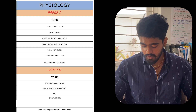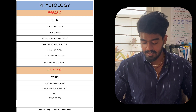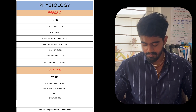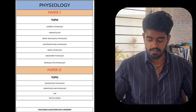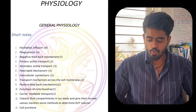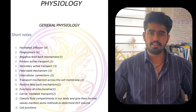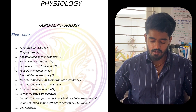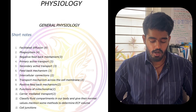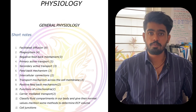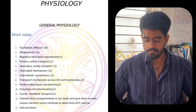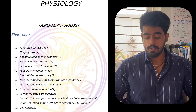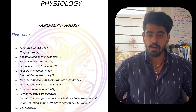For paper 2 physiology, the topics are respiratory physiology, CVS, CNS, and special senses. In general physiology, you won't really be getting essay questions — you will just be getting short notes. The most important short notes are: facilitated diffusion, phagocytosis, negative feedback mechanism, primary active transport, and secondary active transport.